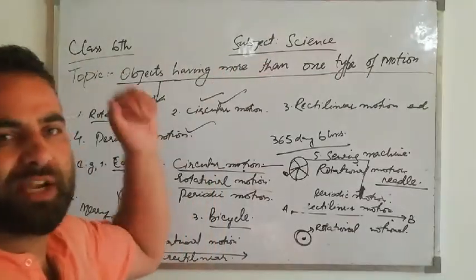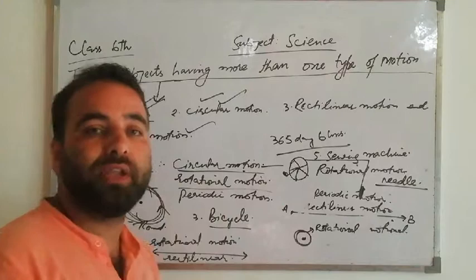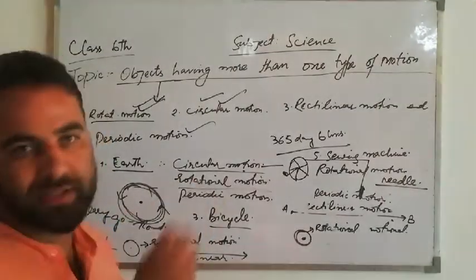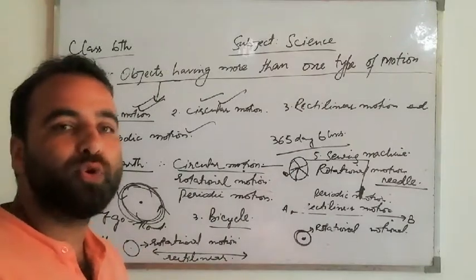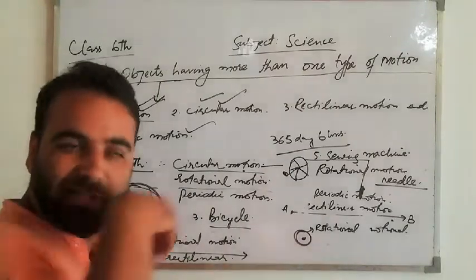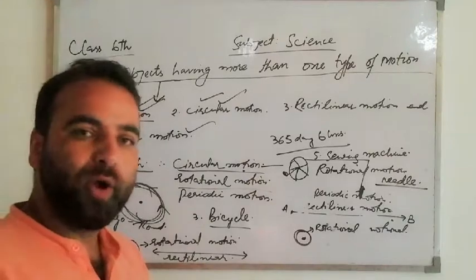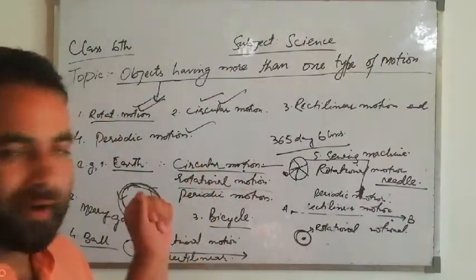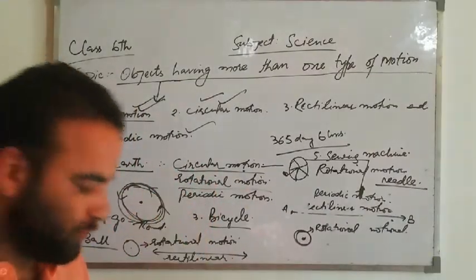This is the topic: objects having more than one type of motion. There are many objects which do not show just one type of motion — they show many types of motion at the same time. Hope you have understood it completely. Thank you.